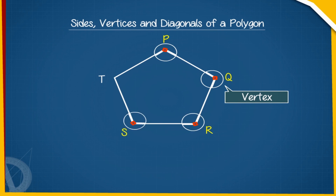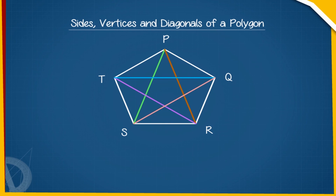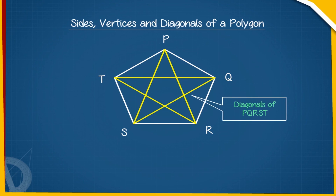The point where two adjacent sides of a polygon meet is called the vertex of the polygon. Here, P, Q, R, S, and T are the vertices of polygon PQRST. The line segment that joins any two alternate or non-adjacent vertices of a polygon is known as the diagonal. PS, SQ, PR, TR, and TQ are the diagonals of polygon PQRST.